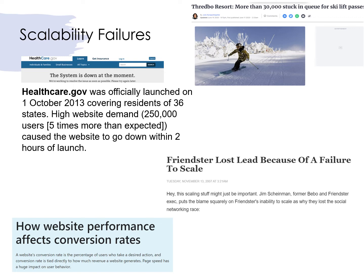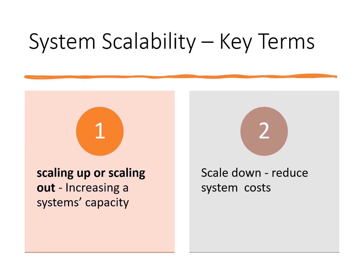External trigger events often cause these tipping points. Look at the press from April 2020 for many reports of government unemployment systems and supermarket online ordering sites that crashed under the increased demand caused by the coronavirus pandemic. Increasing a system's capacity in some dimension by increasing resources is called scaling up or scaling out. I'll explore the difference between these two in a later video. In addition, unlike physical systems, it's often equally important to be able to scale down the capacity of a system to remove unused resources.